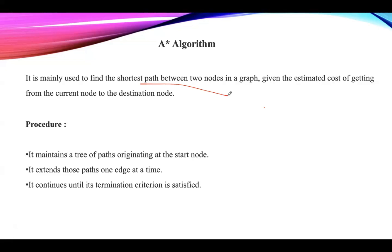A* combines the advantages of both Dijkstra's and Greedy Best First Search algorithms. Like Dijkstra's, A* ensures the path found is as short as possible, but does so more efficiently by directing its search through a heuristic — similar to Greedy Best First Search. This heuristic function, denoted h(n), estimates the cost of getting from any given node to the destination node.